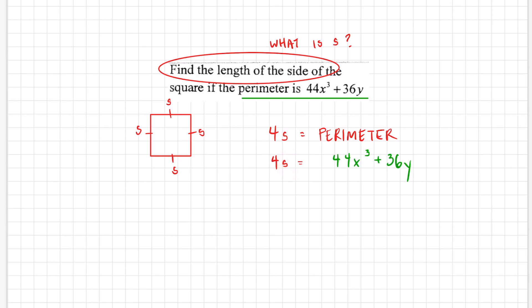Believe it or not this is just a one-step equation and to get s by itself all we have to do is divide by 4 on both sides. Now I got s equals and I could split this up. We can rewrite this just like this from what you learned about dividing polynomials: 44x³/4 + 36y/4.